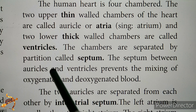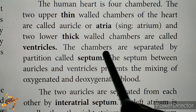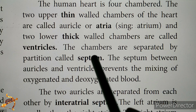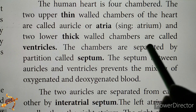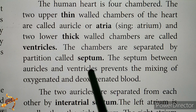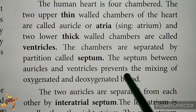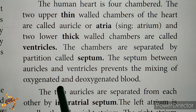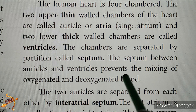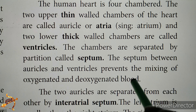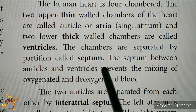The chambers are separated by a partition called the septum. The septum between the auricles and ventricles prevents the mixing of oxygenated and deoxygenated blood.